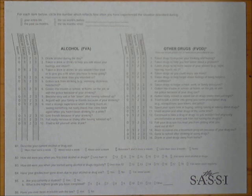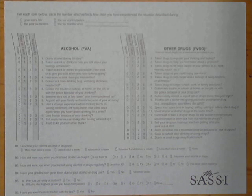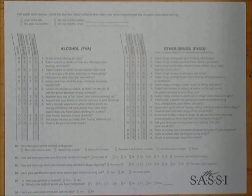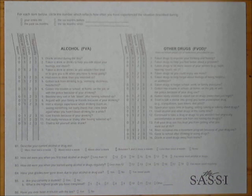Today I will demonstrate proper administration of the Substance Abuse Subtle Screening Inventory Adolescent Version 2. The SASSI-A2 evaluates clients 12 to 18 years of age for the likelihood of a substance abuse or dependence disorder. It is not intended to prove a diagnosis but to be one component in a comprehensive evaluation process.